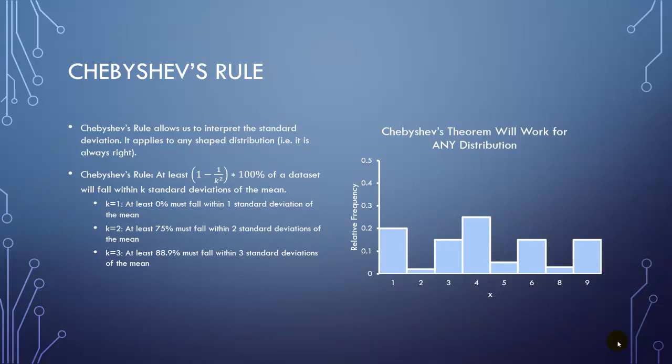But again, we're saying at least 75%, at least 0%, at least 88.9%. That's not necessarily very useful, especially when you look at the one standard deviation rule. At least 0% of the data falls within one standard deviation. That tells you nothing, absolutely nothing. So it's not really all that useful very often.